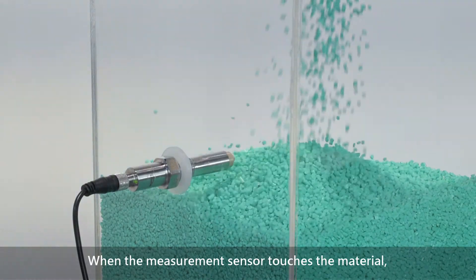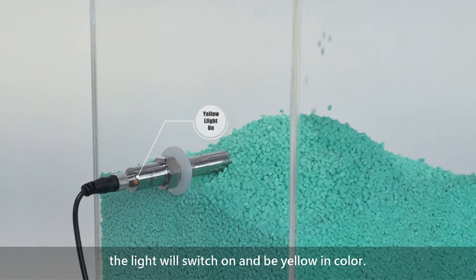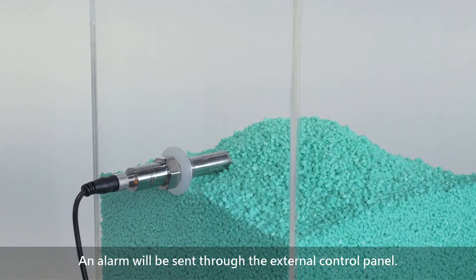When the measurement sensor touches the material, the light will switch on and be yellow in color. An alarm will be sent through the external control panel.